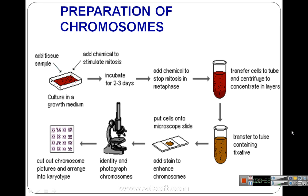To prepare chromosomes for karyotyping: first, take a tissue sample, then add chemicals to stimulate mitosis. The tissue is placed in a growth medium and incubated for two to three days so the culture can grow. After that, chemicals are added to stop mitosis in metaphase.